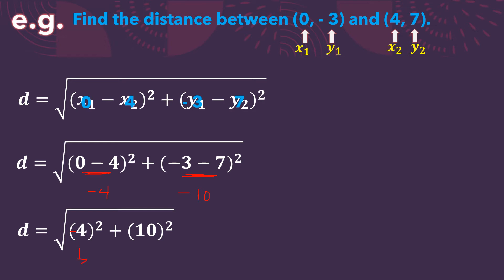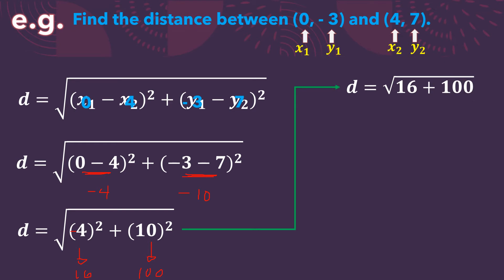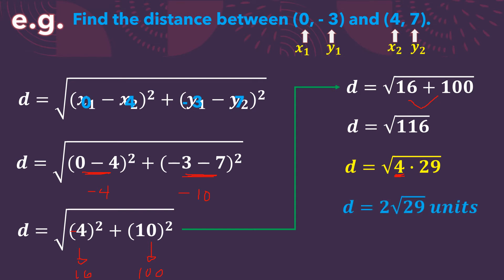Simplifying: 0 minus 4 gives us negative 4, while negative 3 minus 7 gives us negative 10. So d equals the square root of (negative 4) quantity squared plus (negative 10) quantity squared. Negative 4 times negative 4 gives us 16, while 10 times 10 gives us 100. So d equals the square root of 116. Since 116 is not a perfect square, we factor it as 4 times 29, where 4 is a perfect square. The square root of 4 is 2, so the distance is 2√29 units, or approximately 10.77 units.